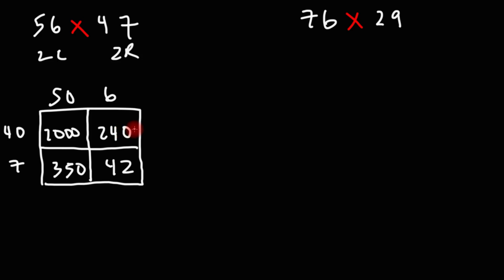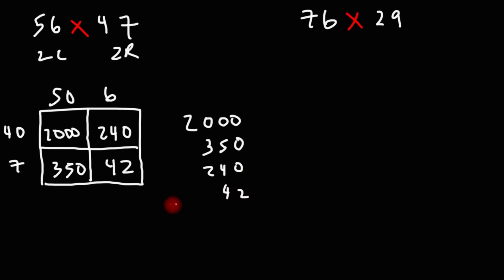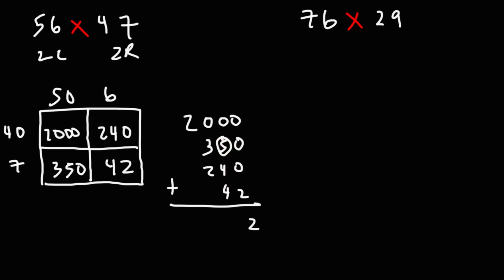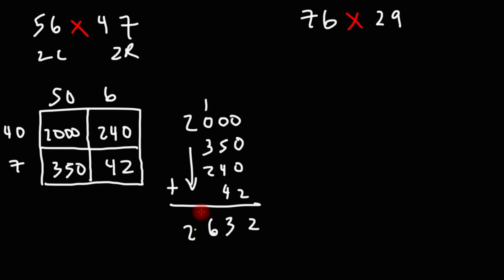Now to get the answer we need to find the total of what's inside. So let's add 2,000, 350, 240, and 42. The order in which you add it really doesn't matter. In the first column we have three zeroes plus a two — that's going to be 2. For the second column we have 5 plus 4 which is 9, plus 4 that's 13; write the 3, carry over the 1. Next we have 1 plus 3 plus 2, that's going to give us 6. And then for the last part we just bring down a 2. So 56 times 47 is 2,632.